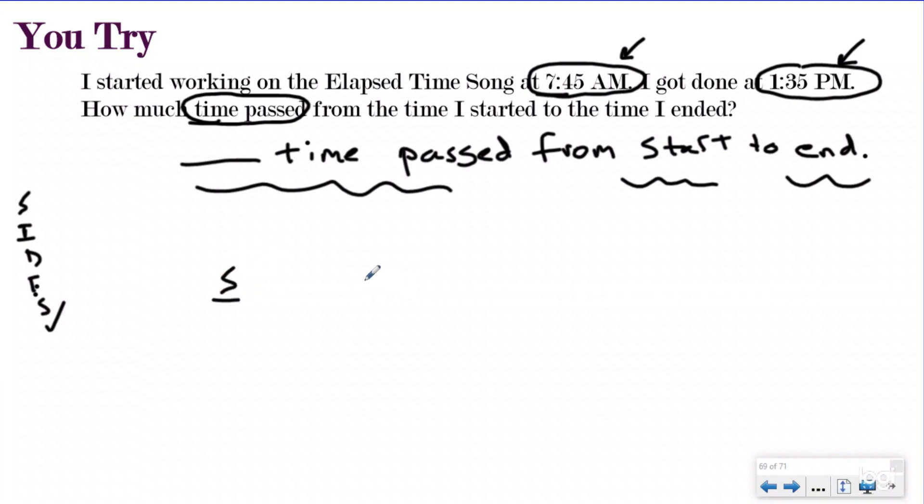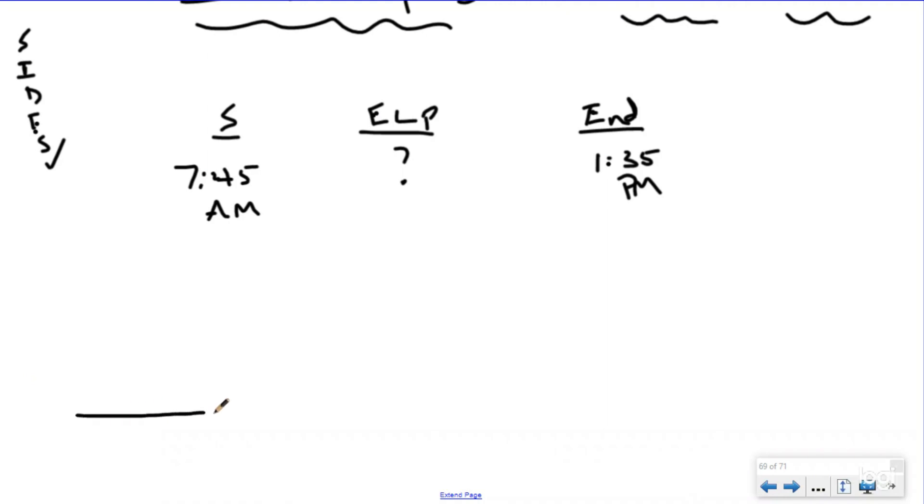Let's go ahead and organize our information into start, elapsed, end. And I know that I started at 7:45 a.m. I know that I ended at 1:35 p.m. And again, I know I'm going to be crossing over 12 because I went from morning to afternoon. So let's go ahead and draw a nice long timeline. As always, the first thing I'm going to do is put my start time on there.